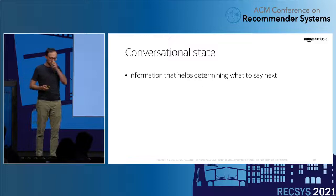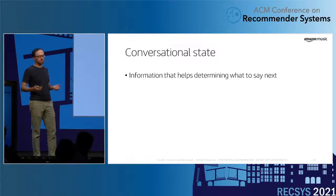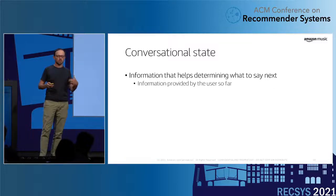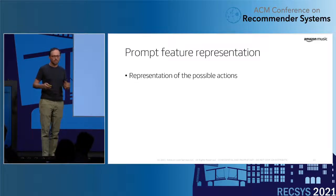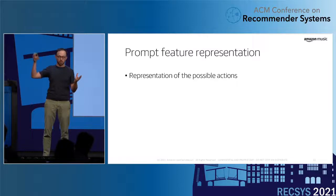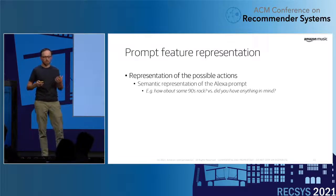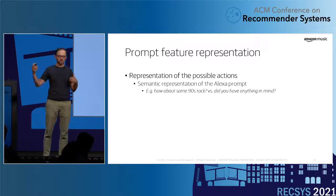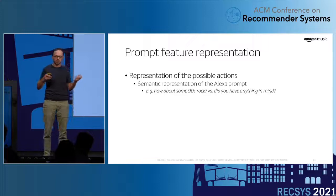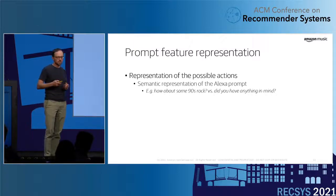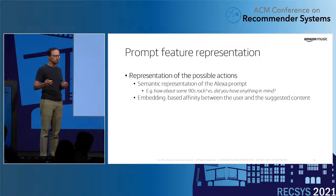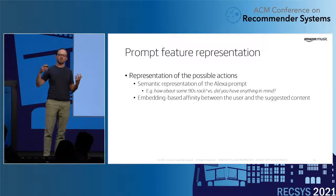In order to learn what to ask next, we need to define a feature representation for the state or context. We use features characterizing the information the user provided within the conversation, the length of the conversation, the subscription tier of the user, and many more. We also need a feature representation for every action — meaning each candidate prompt. We represent the meaning representation of the prompt, such as the type of slots being represented, like genre, era, or artist. We also have features for the type of question being asked — whether it's open-ended, a suggestion, or something else. Additionally, we have an embedding-based affinity feature that captures the affinity between the user and the entity being suggested.